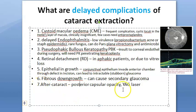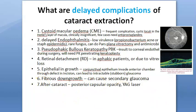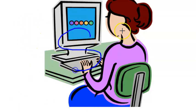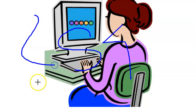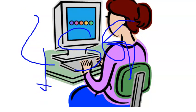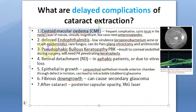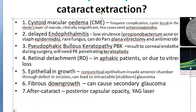Summary of delayed complications: cystoid macular edema, delayed endophthalmitis, pseudophakic bullous keratopathy (which may require penetrating keratoplasty), retinal detachment, epithelial ingrowth and fibrous downgrowth leading to secondary glaucoma, and after-cataract (posterior capsular opacification).